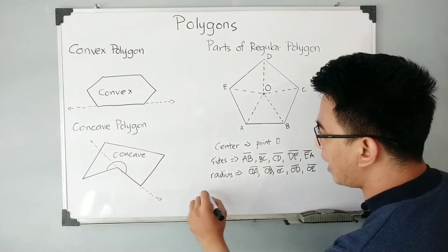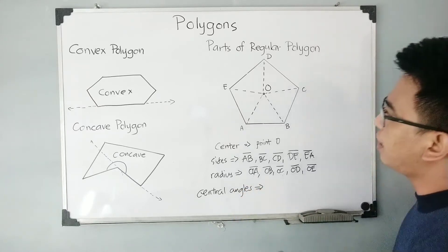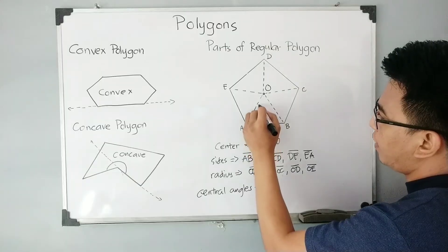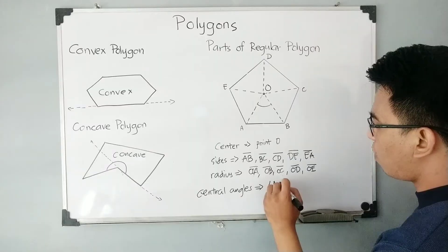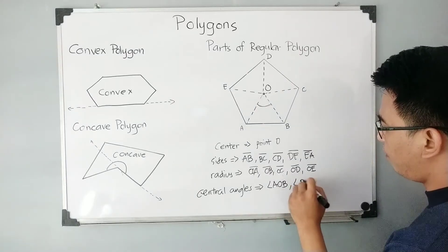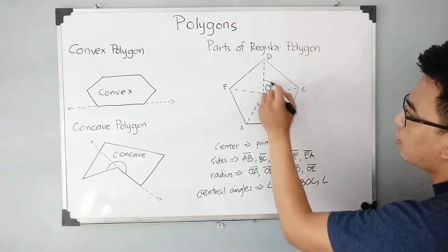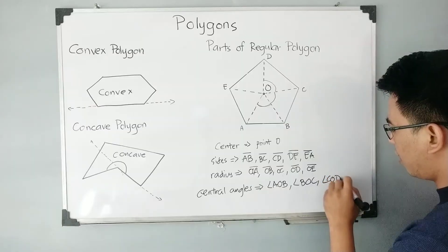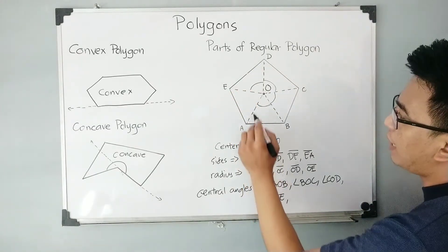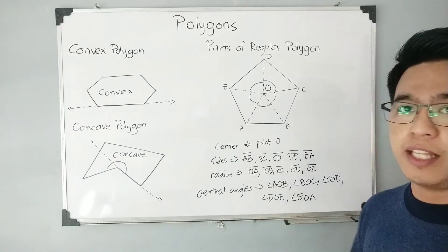Next we have what we call the central angle. The central angles are the angles formed when you join the center and two consecutive vertices. One of the central angles is angle AOB. We also have angle BOC, angle COD, angle DOE, and lastly angle EOA — as long as the vertex in the middle is the center of the polygon.